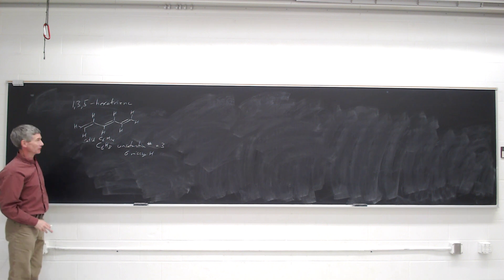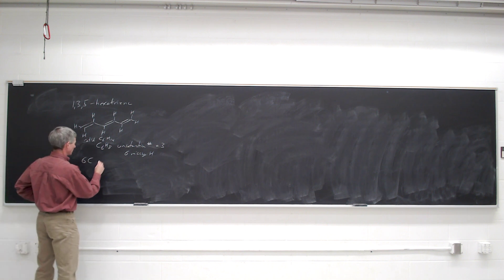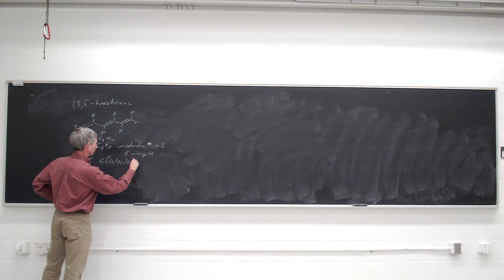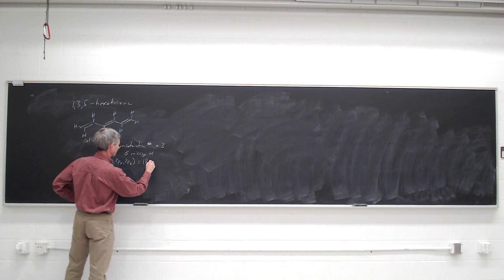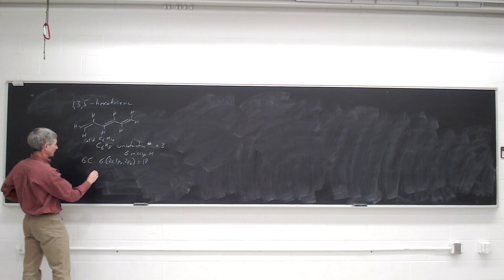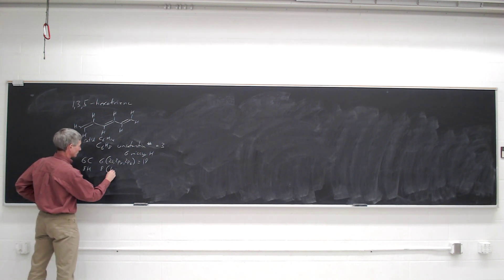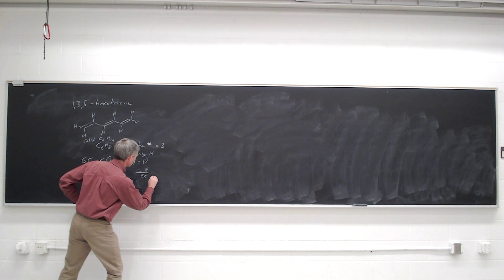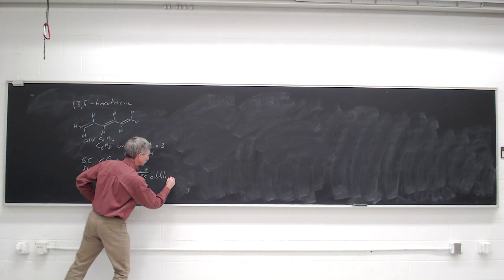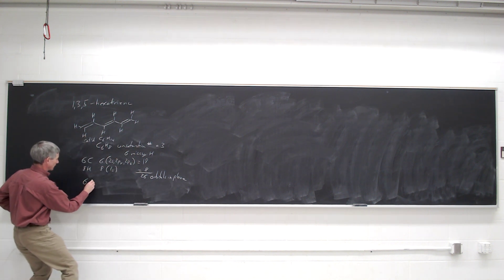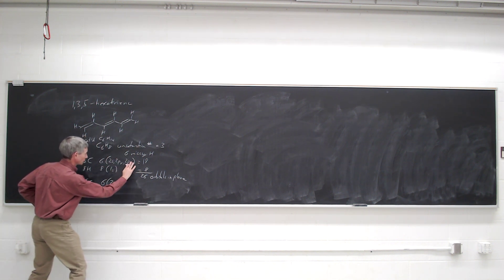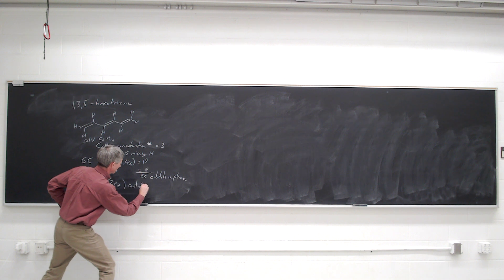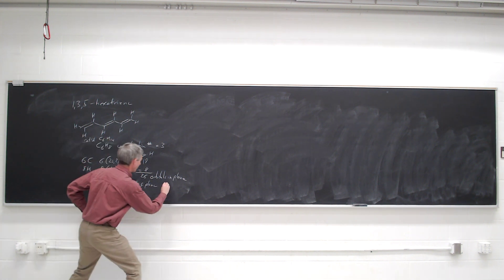There is a 2pz orbital on each one of these carbons, so we have 6 carbons, which means we have 6 times the 2s, 2py, and 2pz orbitals, which is 18. And we have 8 hydrogens, so we have 8 hydrogen orbitals, which means we have a total of 26 orbitals in the plane that we're not going to worry about, and then we have 6 of the 2pz orbitals out of the plane, which are the ones we're going to worry about.